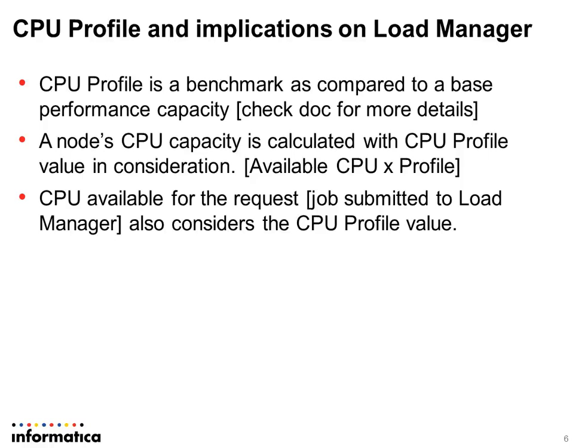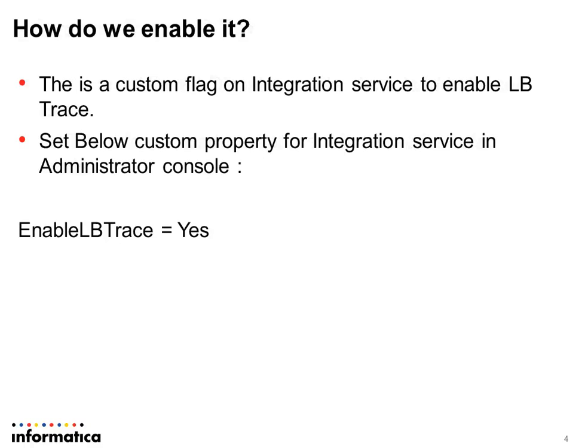Node CPU capacity is calculated as available CPU multiplied by the profile value, and CPU available for the request also considers the CPU profile value. So in a grid with three nodes where two have the same CPU profile and the third has a higher profile, you will see most jobs getting dispatched to the node with the higher CPU profile, since that node is always ranked as the best available with respect to CPU, given that memory requirements are fulfilled.